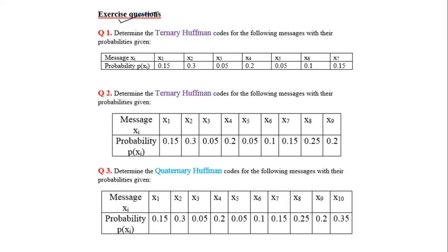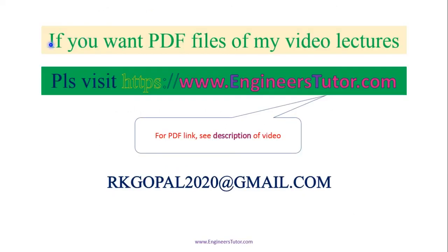Here homework questions are given. Determine the ternary Huffman code for this problem, where the message probabilities are not in order — we must arrange them in decreasing order first. There is also a question to find ternary Huffman coding for another problem, and question number 3 asks to determine the quaternary Huffman codes for given messages. For PDF files of these video lectures, please visit www.engineerstutor.com, or see the video description. You can also write to me at rkgopal2020@gmail.com for any doubts and queries.